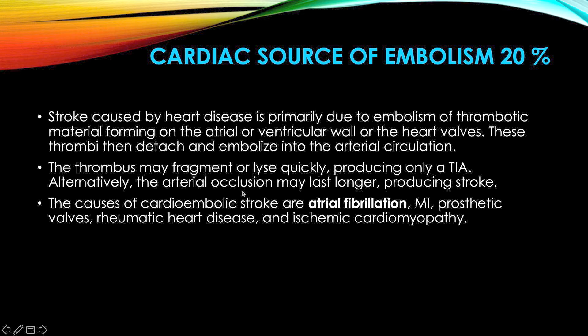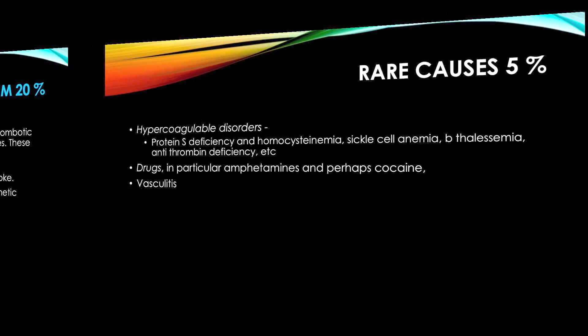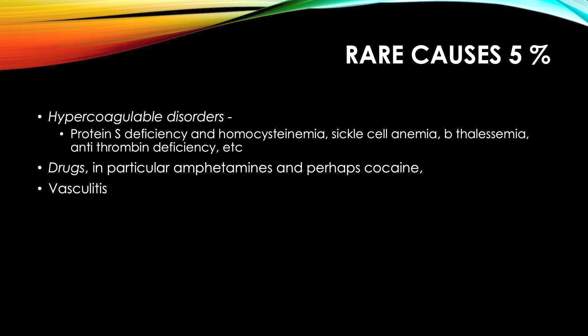Rare causes include hypercoagulable disorders due to genetic deficiencies such as protein S deficiency, homocystinemia, sickle cell anemia, beta thalassemia, and antithrombin deficiencies. Certain recreational drugs like amphetamines and cocaine also lead to hypercoagulability, as does vasculitis.